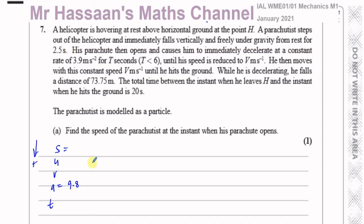We don't know how far he falls in those first 2.5 seconds. We know his initial speed is 0 because he falls from rest, the time he falls for is 2.5 seconds, and we need to find V. We have U, A, and T, so this is a pretty simple one — V equals U plus AT will suffice.